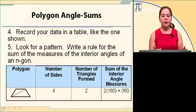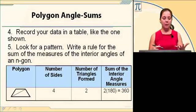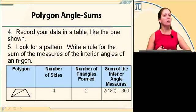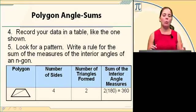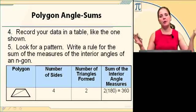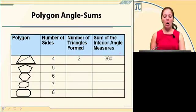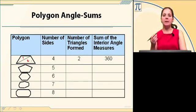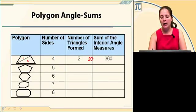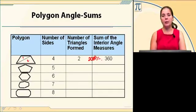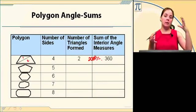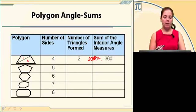What we're going to do then is record all this information in a table, look for a pattern, so that if we need to find the sum of the interior angles of a 100-gon, we can do that without drawing the 100-gon, dividing it up into triangles, or measuring all the angles and adding them together. I drew a four-sided polygon or a quadrilateral, looks like a trapezoid. There are two triangles formed, and the sum of the interior angles is 360 because 2 times 180 equals 360.